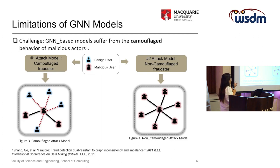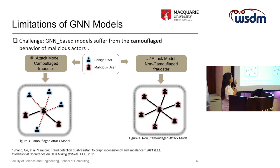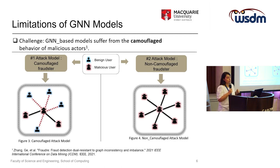In contrast, we have non-camouflage fraudsters in the network. In the second type of attack model, induced by non-camouflage fraudsters, they try to connect to other fraudsters in the network, acting as a group to reach a common goal.